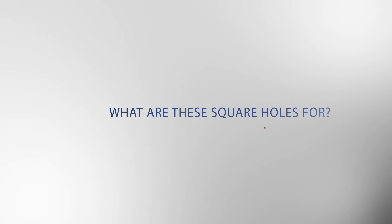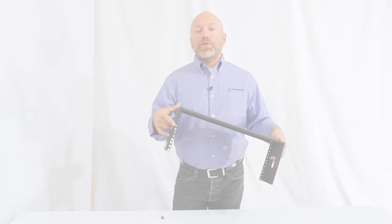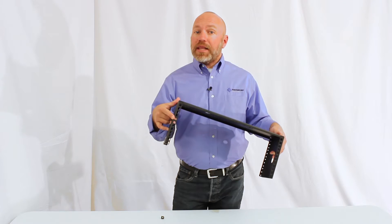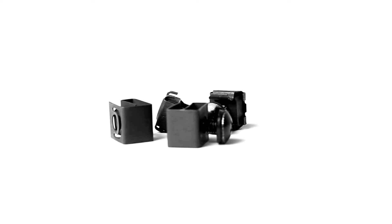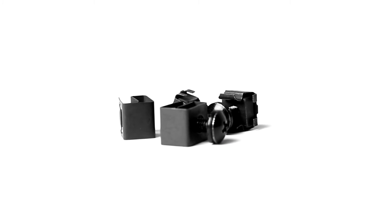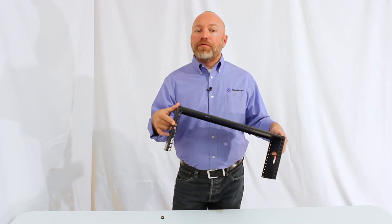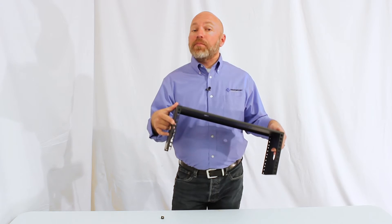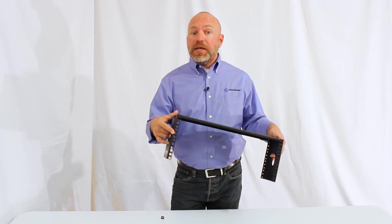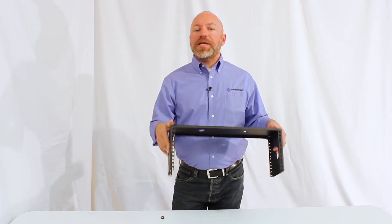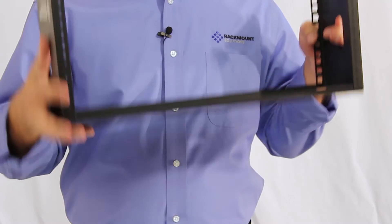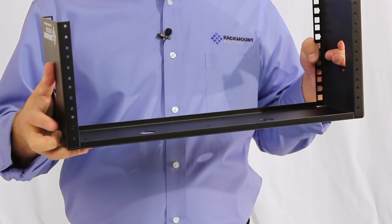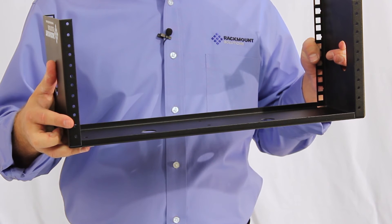What are these square holes? These are called universal holes that allow for clip and cage nuts to be added and removed quickly and easily. Basically, these universal holes provide more flexibility and less wear and tear, as opposed to the stripping of your typical tapped holes.